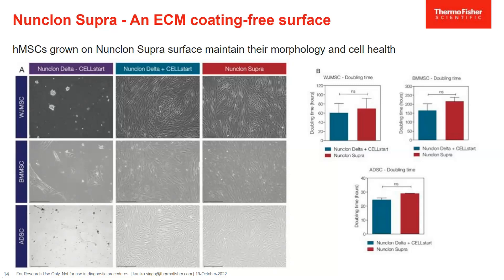On the right, you can see the doubling time of the cells grown on Delta surface with ECM coating versus Supra surface. There was not a significant difference between the doubling time of the cells grown on these two surfaces. We also checked for cell viability of the cells grown on these surfaces, and in all cases the viability was above 95%. This set of data tells us that MSCs can be grown properly on Nunclon Supra surface, and their morphology and cell health is preserved on this surface.